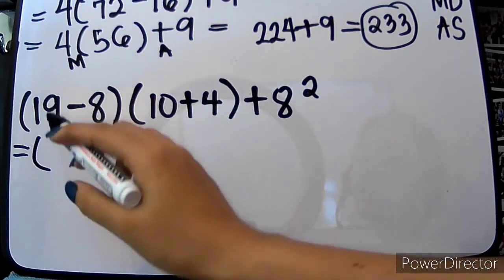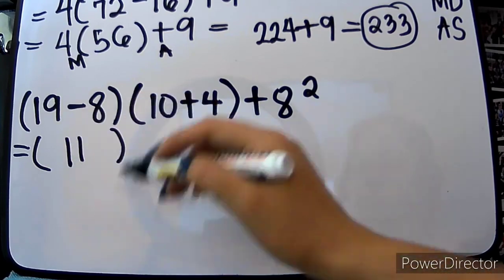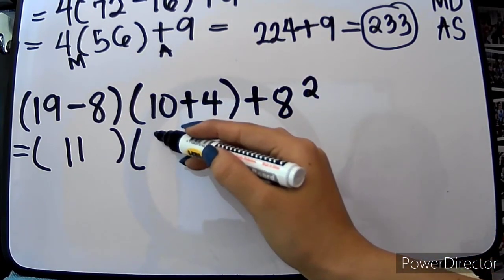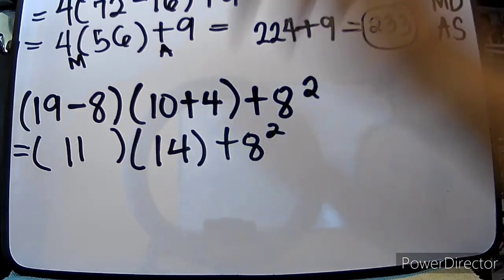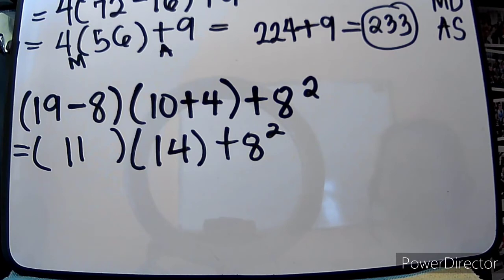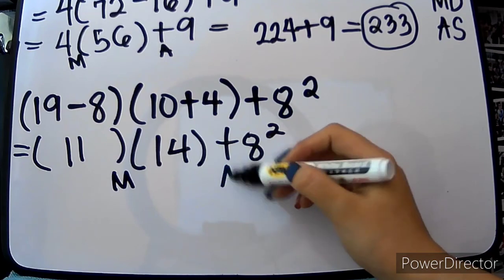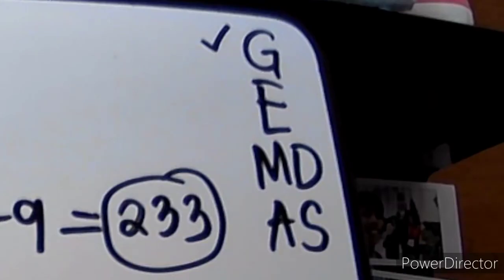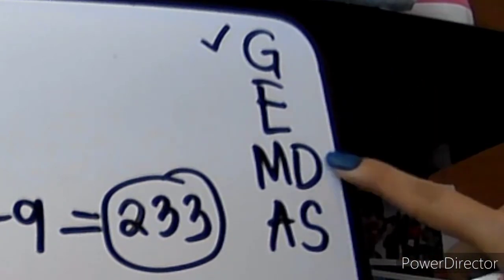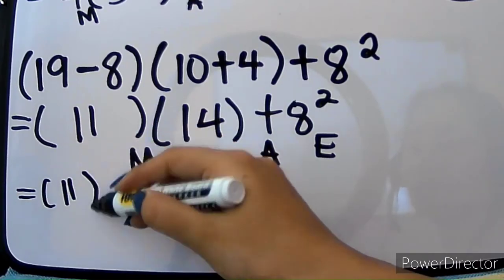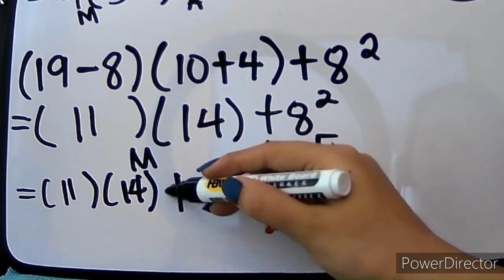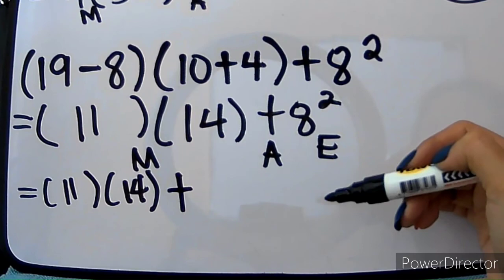Sa ating unang grouping symbol is 19 minus 8, which is 11. And then, ito ulit — may grouping symbol tayo. 10 plus 4 will give us 14, plus 8 squared. The reason why may parentheses po rin to — ang operation po natin ay multiplication. We have a multiplication, addition, and exponent. And if you will check here, nandito yung M, nandito yung A, nandito yung E. So yung E muna ang una nating gagawin.